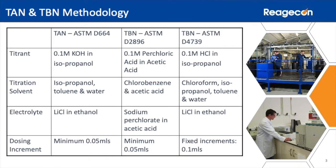Reagecon has a complete offering of standards and reagents for both TAN and TBN, irrespective of method used. These include titrants, standards, buffers, and electrolytes for the major ASTM methods. The suite of products extends to titrants required for back titration and the potassium hydrogen phthalate used to re-standardise or refactor the titrants.